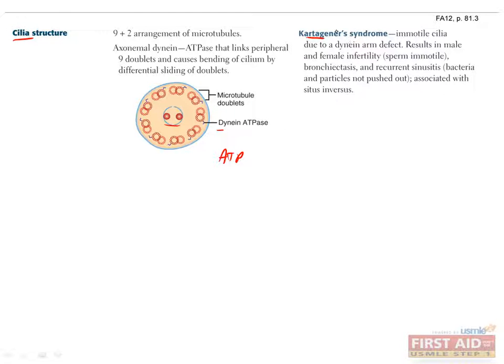Kartagener syndrome, also known as ciliary dyskinesia, is a rare autosomal recessive disorder that results in immotile cilia due to a defect in dynein. This results in both male and female infertility, since sperm can't move and the cilia in the fallopian tubes can't propel the ovum towards the uterus. Patients with Kartagener's also have bronchiectasis and recurrent sinusitis, since cilia are required to sweep particles out of the lungs.